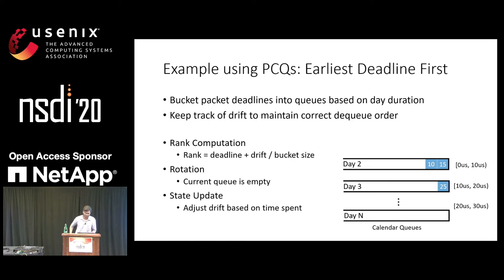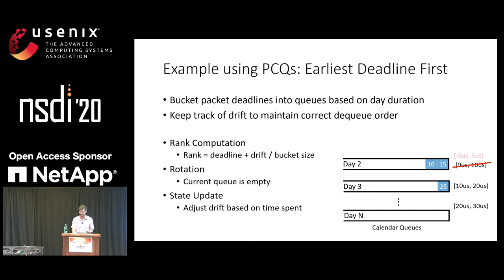We need to keep track of the drift, which depends on how much time we spent in the last queue. If we spent more than 10 microseconds, our effective deadline range is now minus five to five microseconds. If we spent less time in the previous day, our effective deadlines shift to 15 to 25 microseconds. This state adjustment has to be done by the algorithm upon a queue rotation.